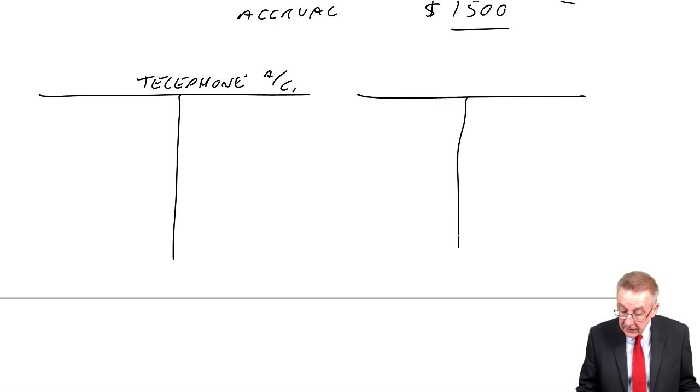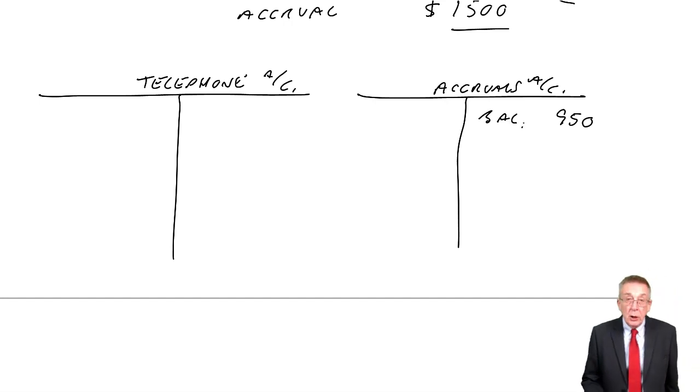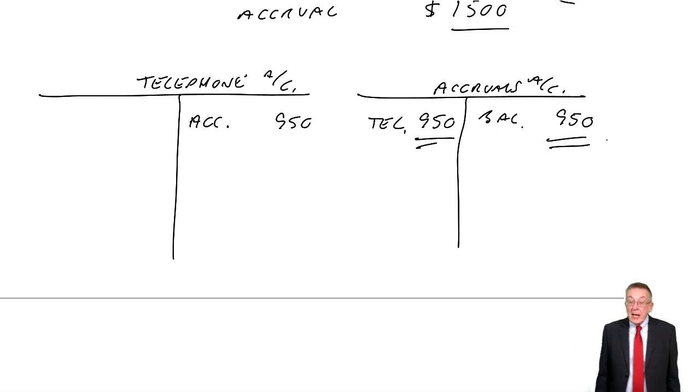At the end of last year, we also had an accruals account. And at the end of last year, we had a credit balance of £950. Look back if you don't remember, but we did have a credit balance of £950. It was the amount owing for the accrual at the end of last year. Now let's move into this year. And the first thing the accountant does, a bit like we did with prepayments, before we give the books back to the bookkeeper, we reverse the accrual. Take out the accrual, £950, debit accrual, credit telephone.